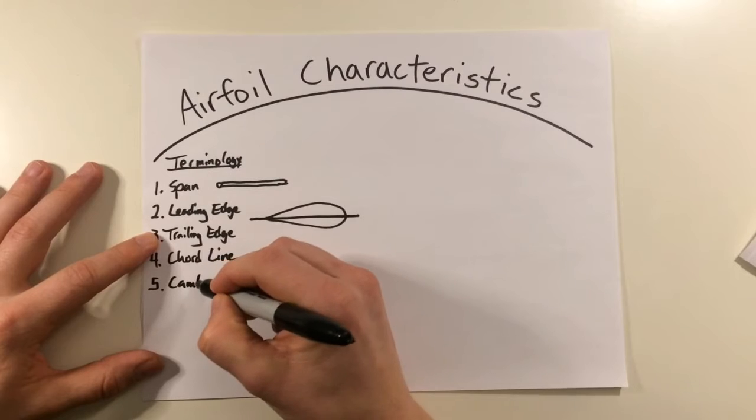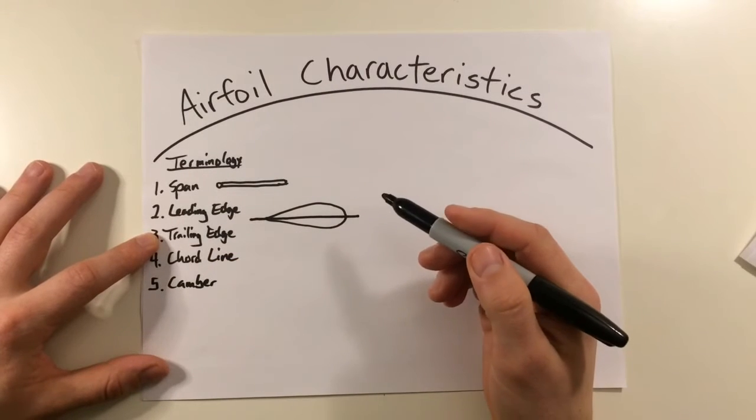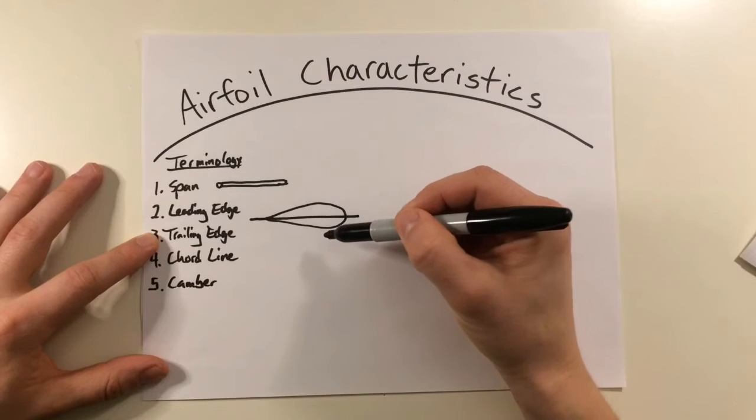Next up, it's going to be the camber. And this is just referring to the curvature of the airfoil itself. You can have the upper camber and the lower camber.